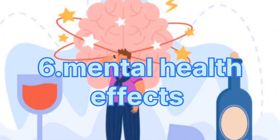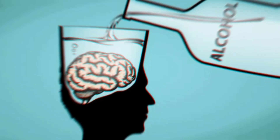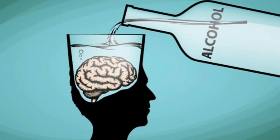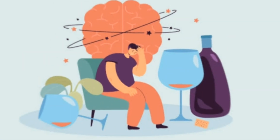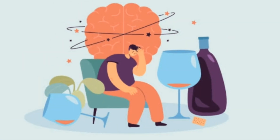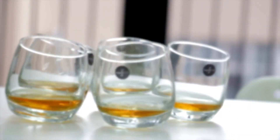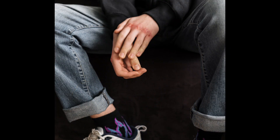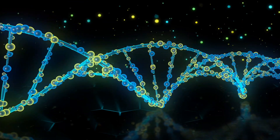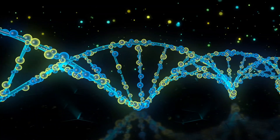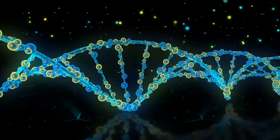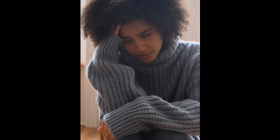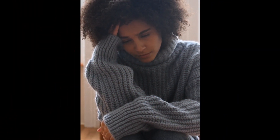6. Mental Health Effects. Alcohol makes it harder for the brain areas controlling balance, memory, speech, and judgment to do their job, resulting in a higher risk of injuries and negative outcomes. Long-term heavy drinking causes alterations in the neurons, such as a reduction in their size, which leads to depression and anxiety.